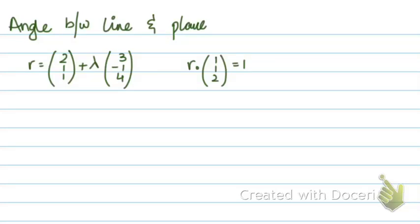How do you calculate the angle between a line and a plane? I have a line equation over here: r = (2, 1, 1) + λ(3, -1, 4), where (2, 1, 1) is the fixed point and (3, -1, 4) is the direction vector. And I have the equation of the plane: r · (1, 1, 2) = 1.